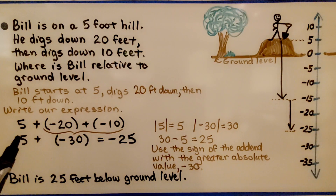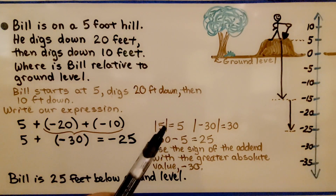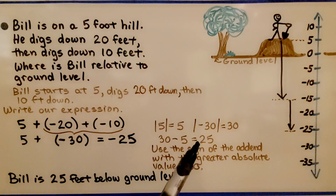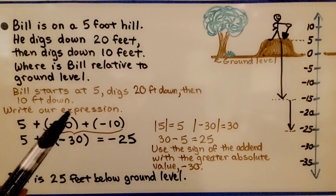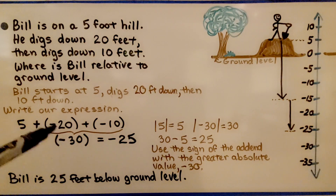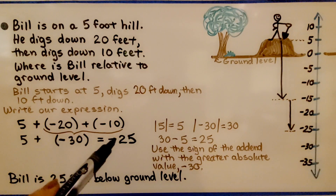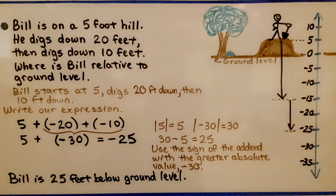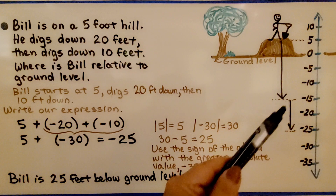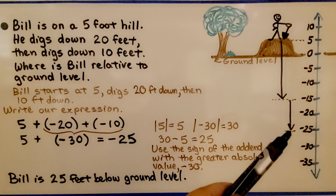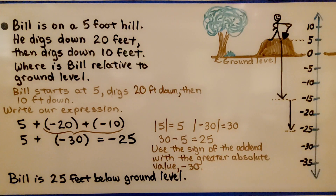Now we can add the positive 5. Because we have a positive and a negative, we need to find the difference between their absolute values, and that's going to be 25. We use the sign of the add-in with the greater absolute value — we could say it's either negative 20 or negative 30, it's still a negative. We're going to be at negative 25. So Bill is 25 feet below ground level, at negative 25.